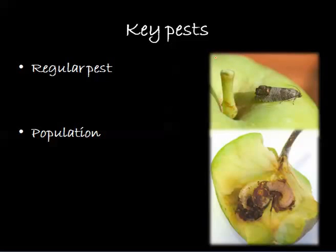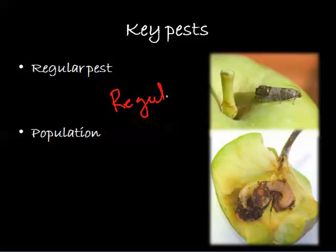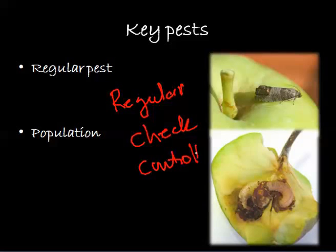In the case of key pests, these are also called regular pests. Their population is always at a damaging or higher level, so they always cause damage unless we have a regular check on that particular population. Regular check or control — these two measures are necessary to keep the population under control.